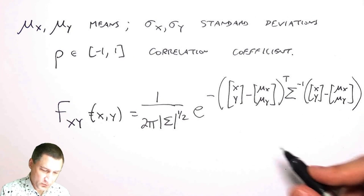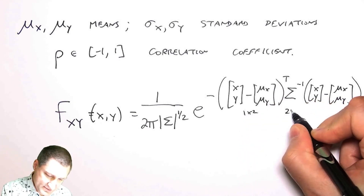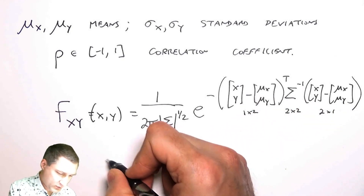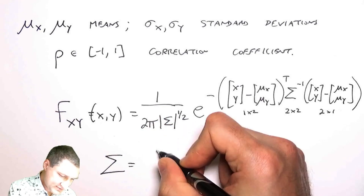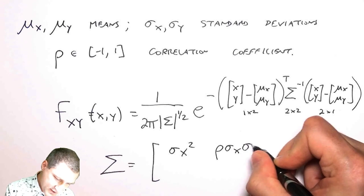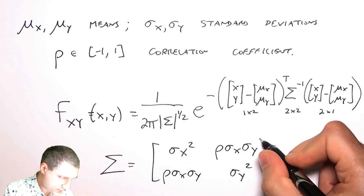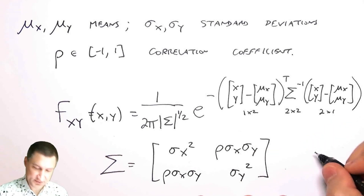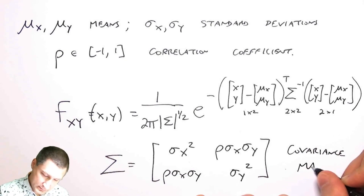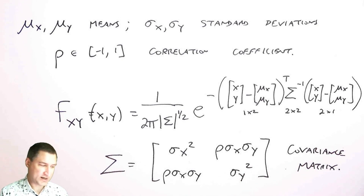So this is a 2 by 1 vector. I'm transposing it, so it's like a 1 by 2. This sigma is a 2 by 2 matrix, and this is a 2 by 1 vector, so really there's just a scalar up here in the numerator. The sigma matrix is defined as this combination of the various standard deviations and also the rho, and this is sometimes called the covariance matrix.